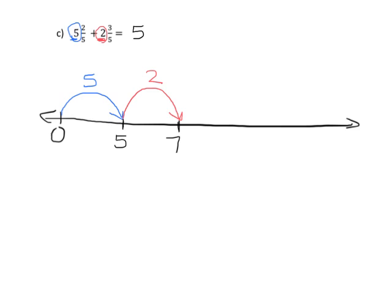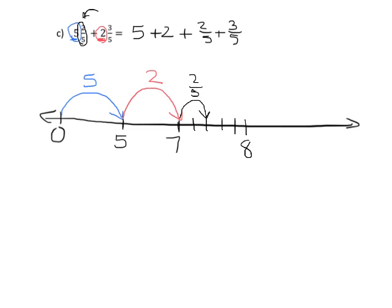I'm really taking this and showing 5 plus 2 plus 2-fifths plus 3-fifths, though I'm not going to explicitly show students that — I'll just piece it together and let them use logic to follow along. Now it's time to add the 2-fifths. Between the 7 and the 8, I'm going to cut that interval into five pieces — there's my fifths — and then I'll go 2-fifths. That puts me at 7 and 2-fifths.